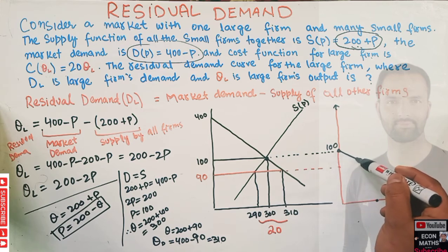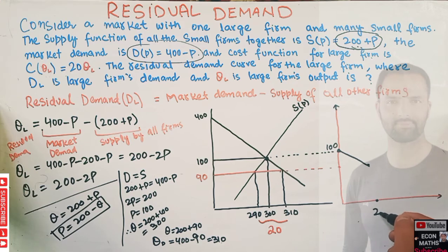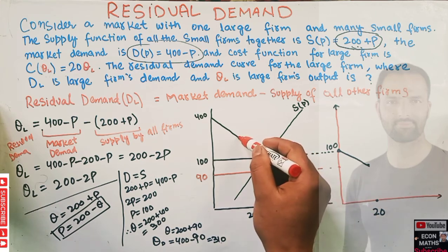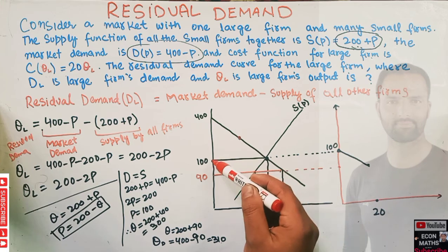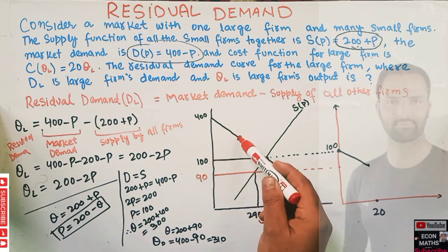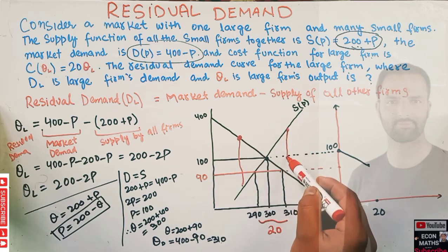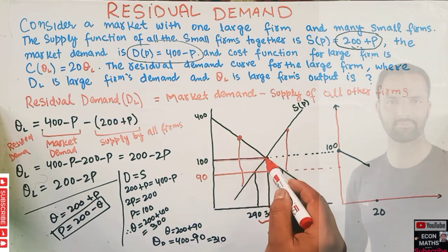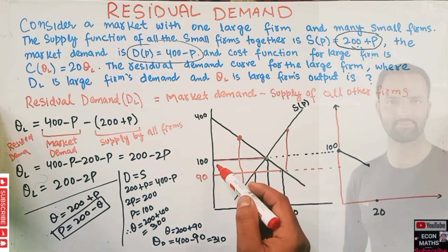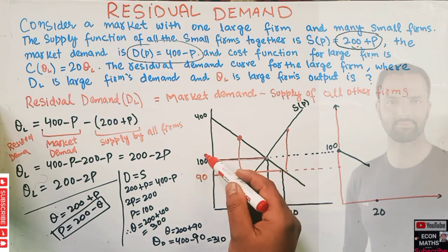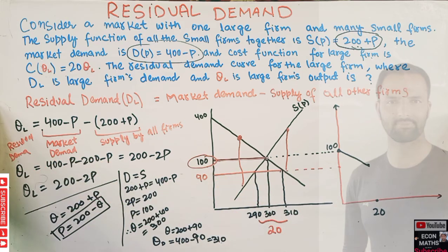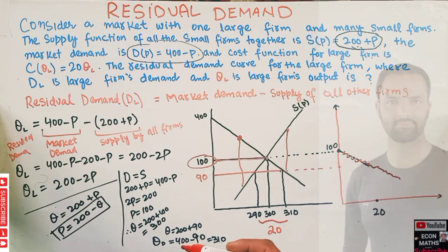We can join these points to trace the residual demand curve for the large firm. When price is above the equilibrium price, quantity demanded is less than quantity supplied, so residual demand is zero. The residual demand curve only applies below the market clearing price of 100.